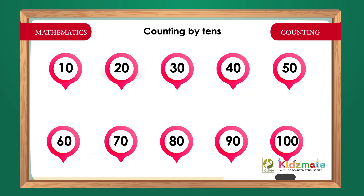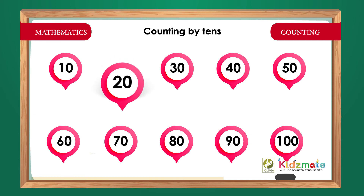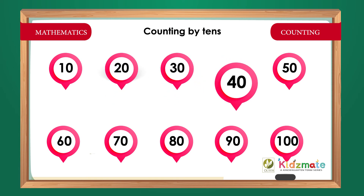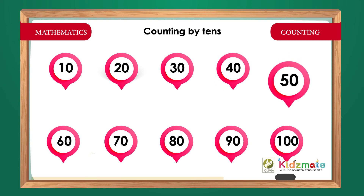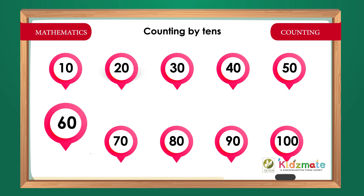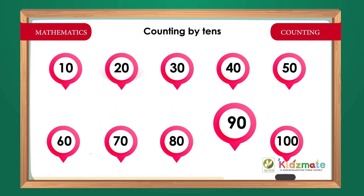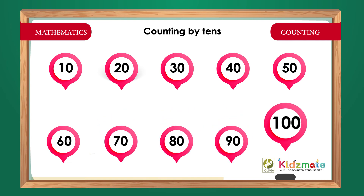Counting by Tens. 10, 20, 30, 40, 50, 60, 70, 80, 90, 100.